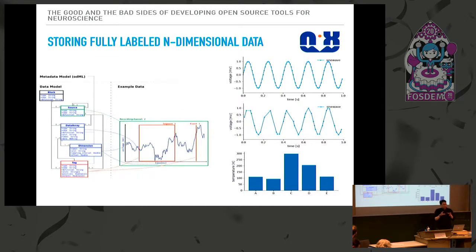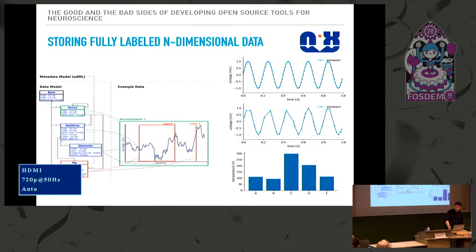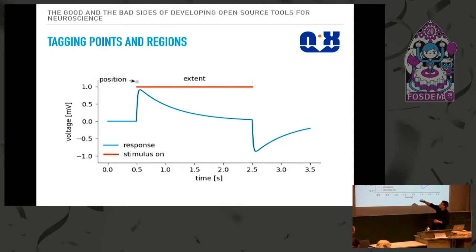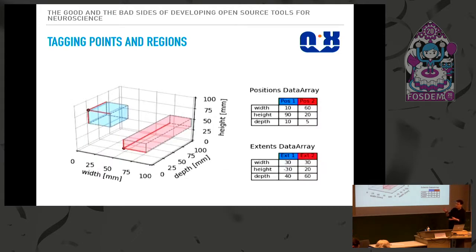To make us independent, we don't only want to store time-dependent information — a dimension could also be something like space. So we have an abstraction there with dimension descriptors meant for different purposes: something that is regularly sampled in time, something that is not regularly sampled in time. We want to be able to tag points and regions — we have the data as the blue line as a function of time and we can store from where to where we want to tag things. This works not only in 1D but also in 2D or n dimensions.